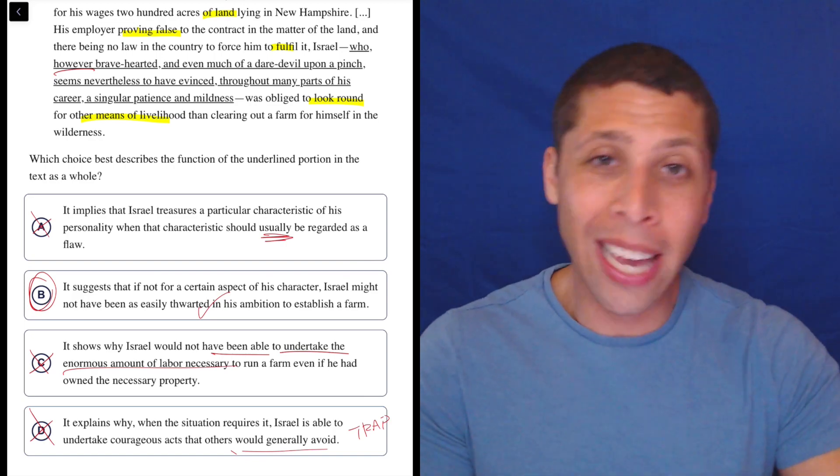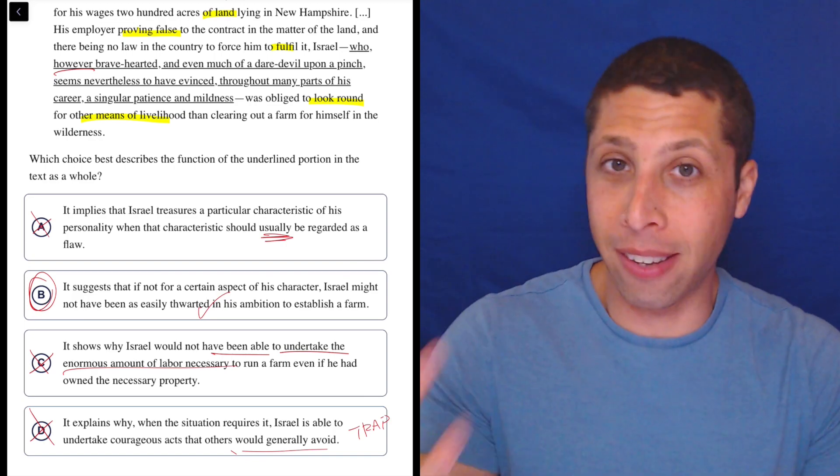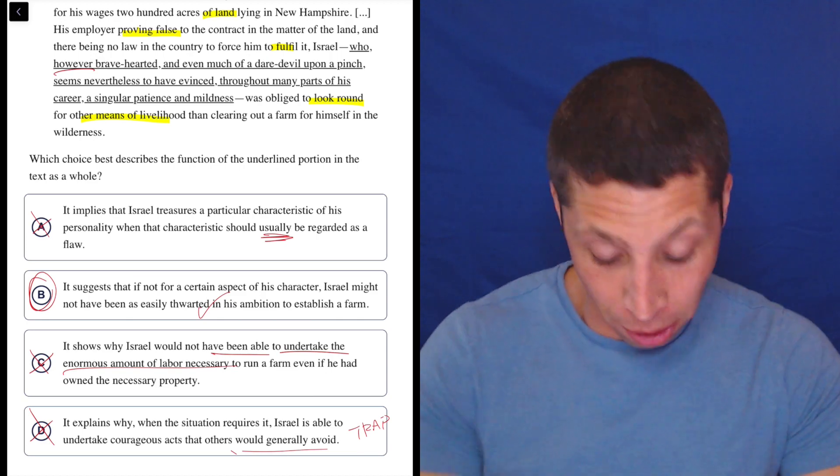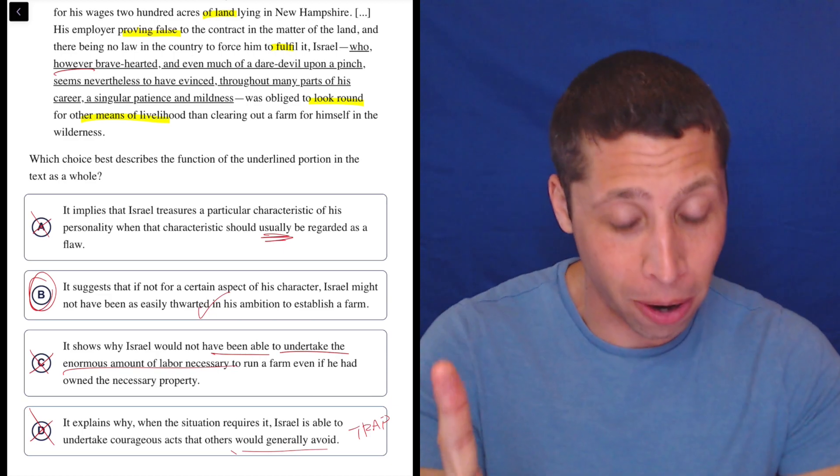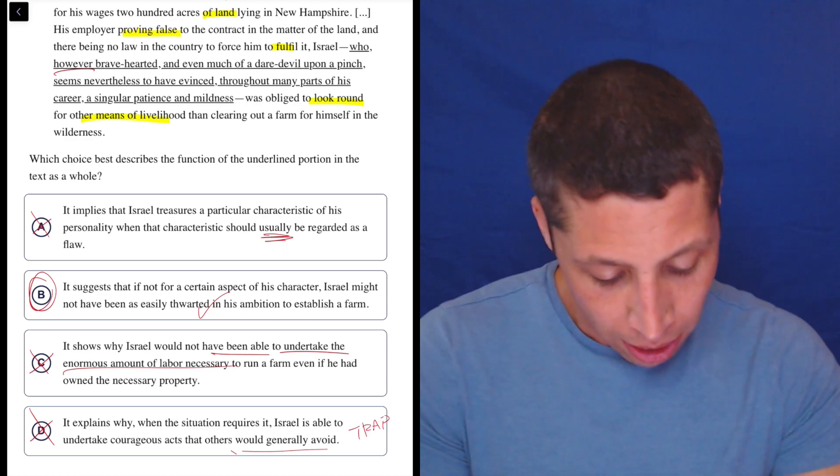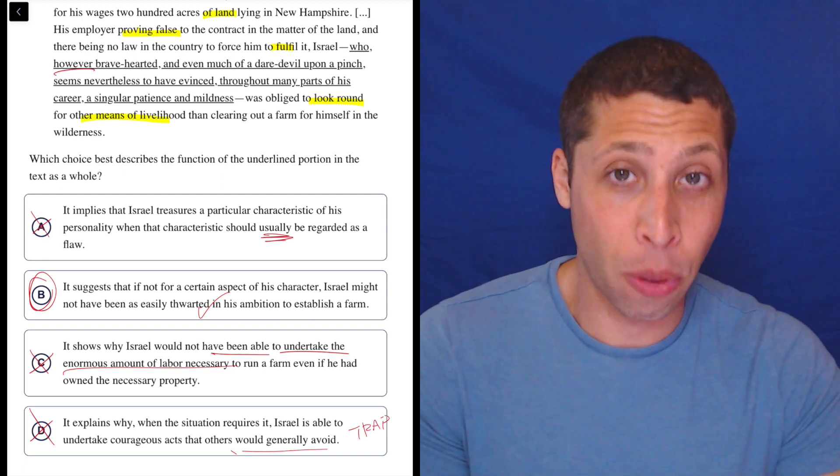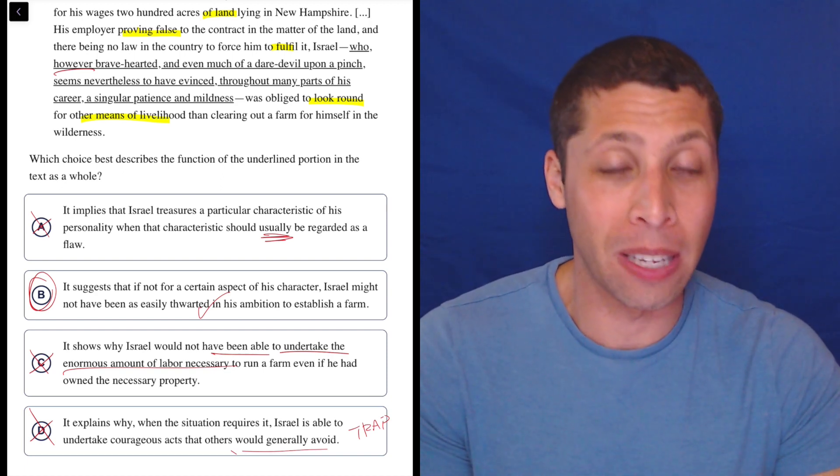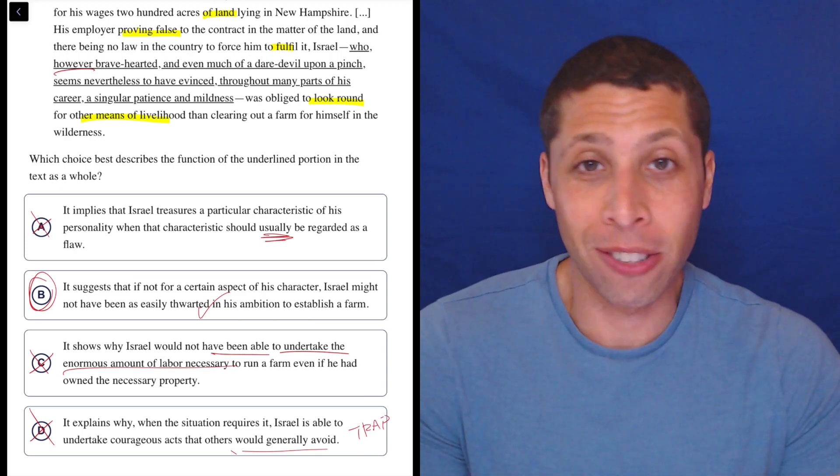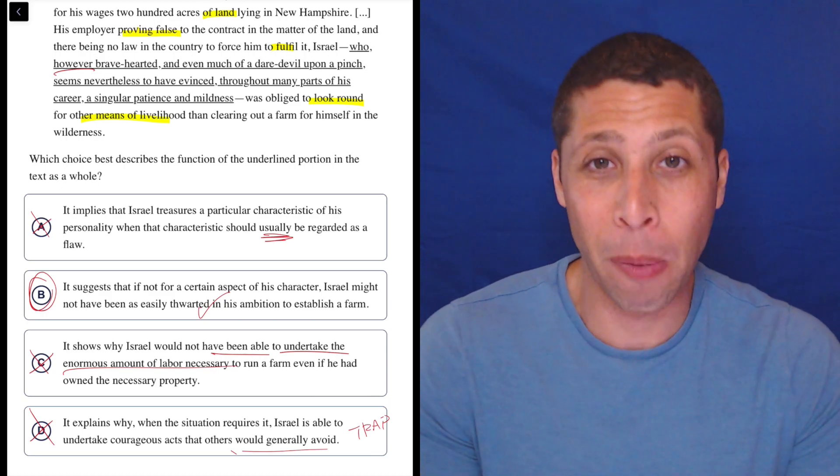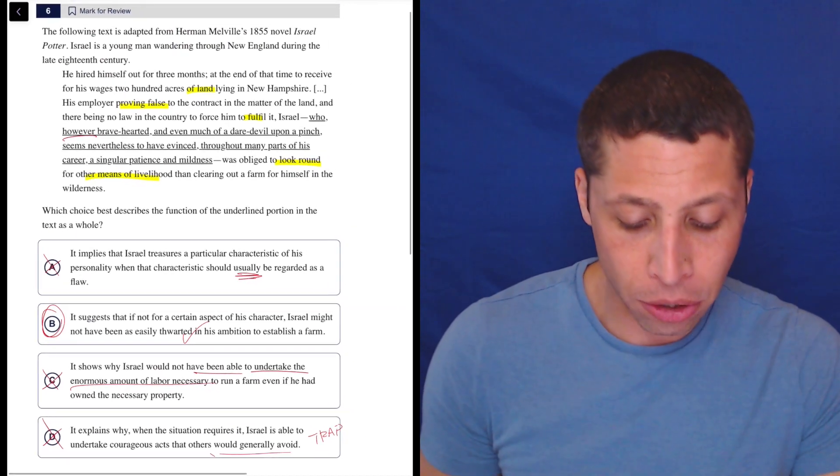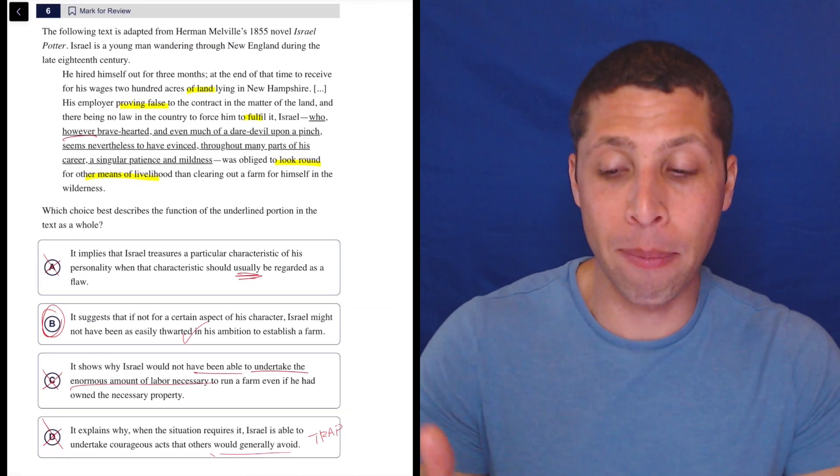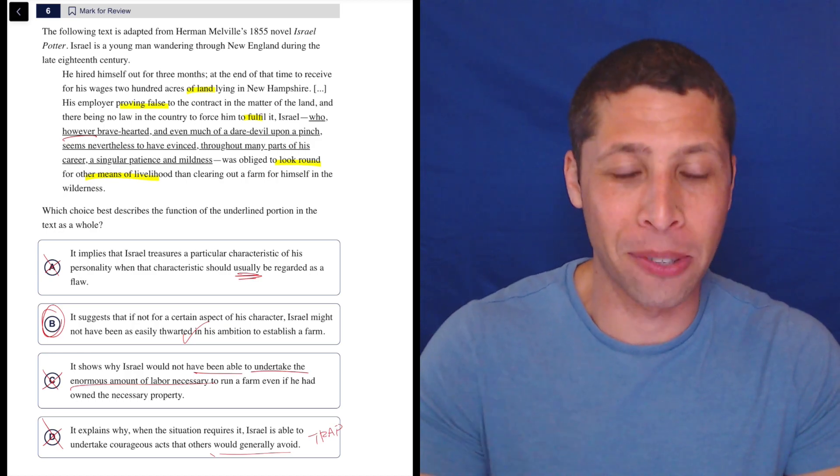And that gets us back to B, which again, I wasn't convinced was right from the start, but I can justify it, whereas the others I can't. It suggests that if not for a certain aspect of his character, right, the fact that he's patient and mild, right, not the brave part, but the patient and mild part, he would not have easily been thwarted, right? If he had been brave, if he had been more of a daredevil, he might have been able to get the farm. But for whatever reason, we don't know, he just isn't that way when it comes to his career. And so his boss just stole the farm from him. And that's that. Tricky passage, couple trap answers, but hopefully we can see how these choices work and maybe make sure that we don't fall for traps on future questions.